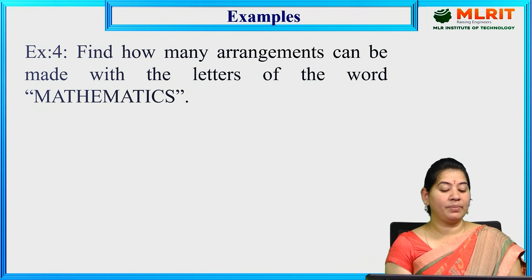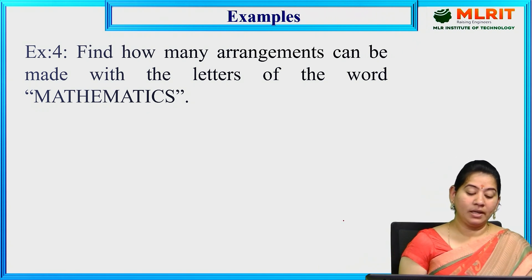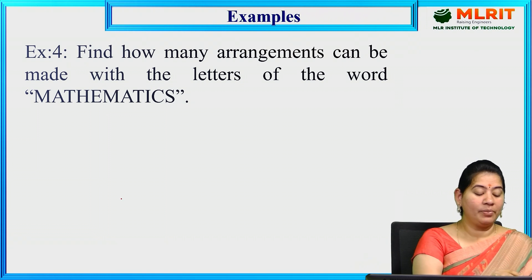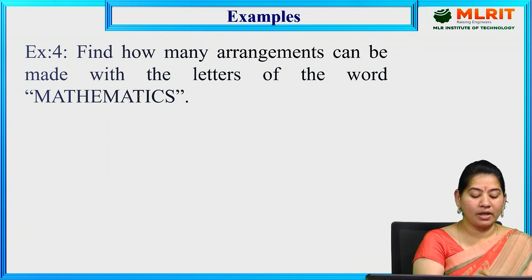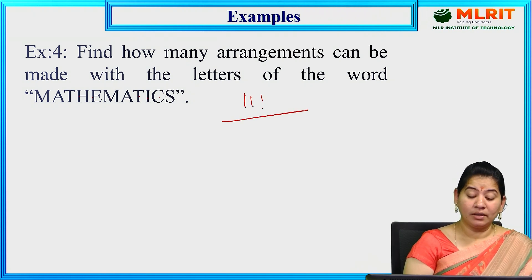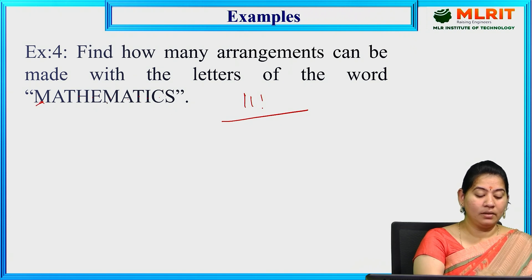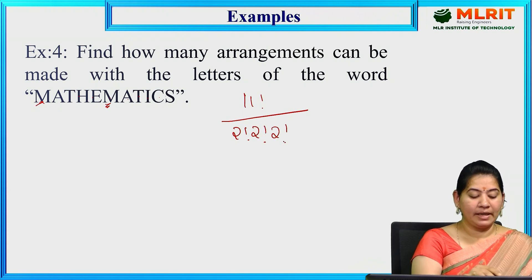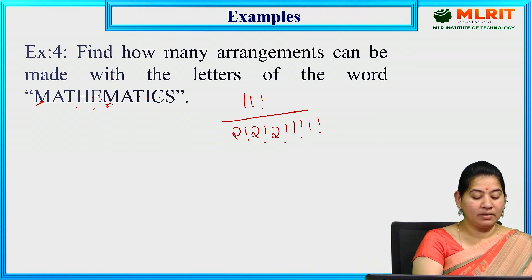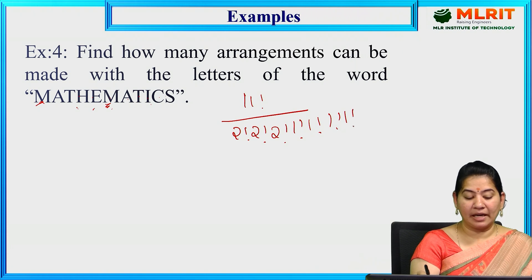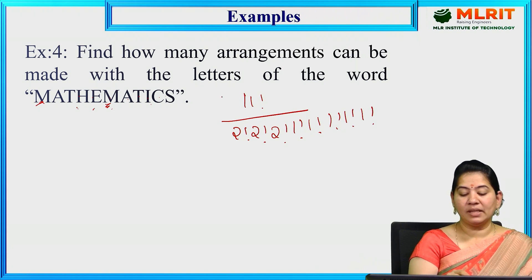How many arrangements can be made with the letters of the word MATHEMATICS? Here M is repeated 2 times, A is repeated 2 times, T is repeated 2 times, H appears 1 time, E appears 1 time, I appears 1 time, C appears 1 time, S appears 1 time. The answer is 11! / (2! × 2! × 2! × 1! × 1! × 1! × 1! × 1!).